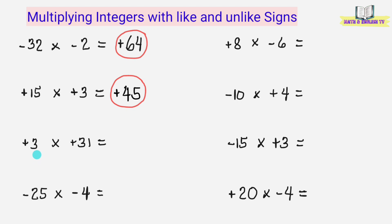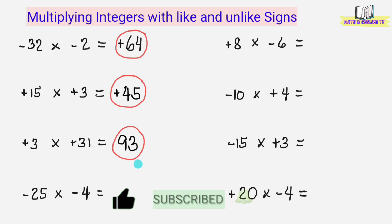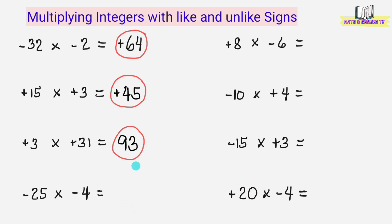Positive 3 times positive 31. I-multiply lamang natin yung numbers: 3 times 31 equals 93. Lalagyan natin ito ng positive sign, kasi pareho yung sign ng ating factors. O pwede rin hindi natin lagyan ng positive sign, kasi yung number na walang sign ay understood na positive yan. Kaya kahit 93 lang yung answer natin, walang positive sign, tama pa rin po yan, dahil yung number na walang sign ay positive number yan.